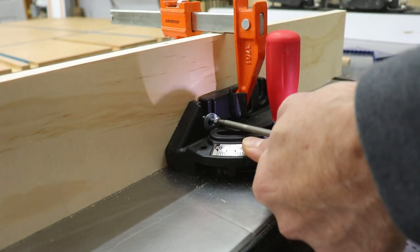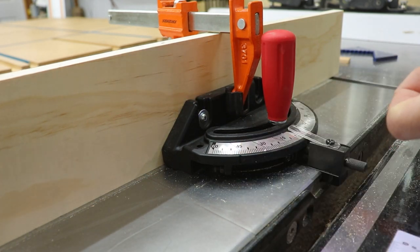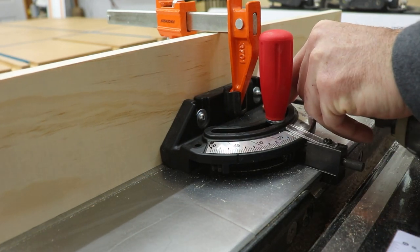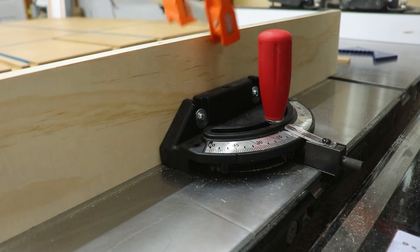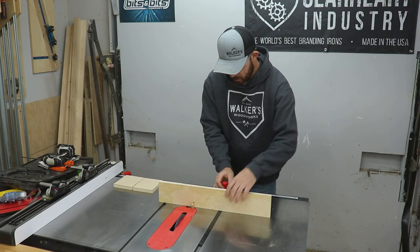Once that's done you can attach the jig to the miter gauge with some screws and washers. Once it's all secured you can make another cut.